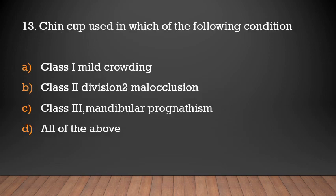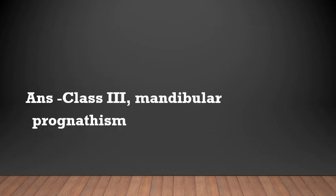Chin cup is used in which of the following conditions? Class 1 mild crowding, class 2 division 2 malocclusion, class 3 mandibular prognathism, or all of the above? Answer: Class 3 mandibular prognathism. Chin cup restricts the forward and downward growth of the mandible, so it is used in class 3 malocclusion cases.